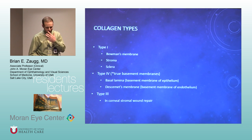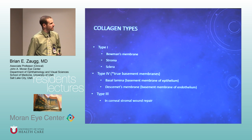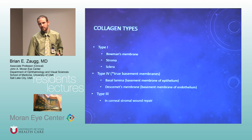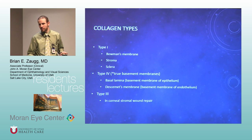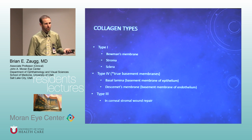To summarize collagen types: type 1 is in Bowman's, stroma, and sclera. Type 4 is always at basement membranes — the epithelial basement membrane and Descemet's membrane in the cornea. Type 3 is for wound repair.